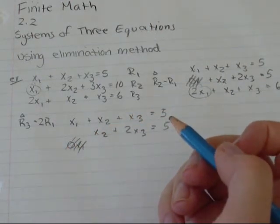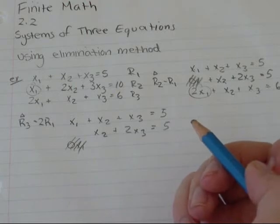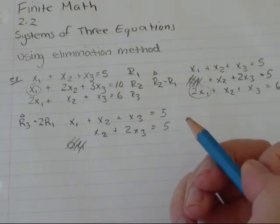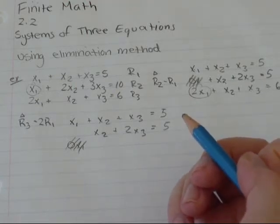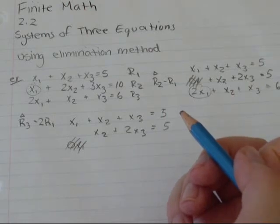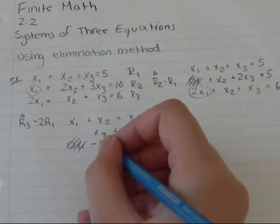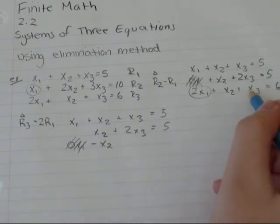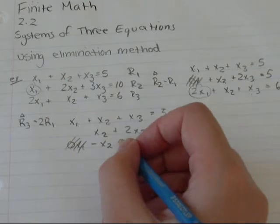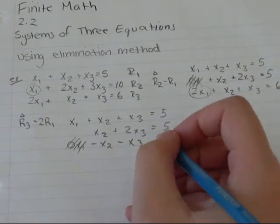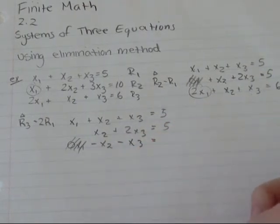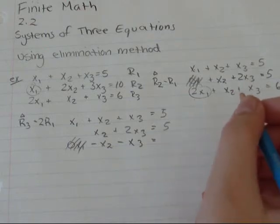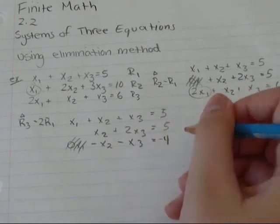Then x2 minus 2x2 gives me negative x2. And x3 minus 2x3 gives me negative x3. And 6 minus 10 gives me negative 4.